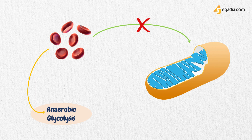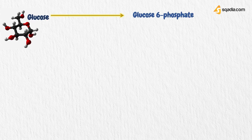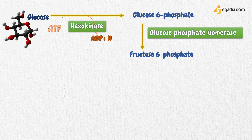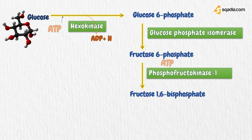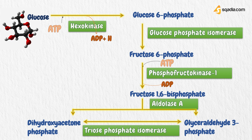Now let's look at the basic steps involved in anaerobic glycolysis. First, glucose transported from the blood into the cells is converted into glucose-6-phosphate by the enzyme hexokinase, utilizing one molecule of ATP and releasing ADP and a hydrogen ion. This glucose-6-phosphate is converted into its isomer fructose-6-phosphate by glucose phosphate isomerase, followed by the formation of fructose-1,6-bisphosphate by the addition of a phosphate group from ATP by phosphofructokinase-1. Another enzyme called aldolase catalyzes the formation of two three-carbon molecules: glyceraldehyde-3-phosphate and dihydroxyacetone phosphate, from the six-carbon fructose-1,6-bisphosphate.